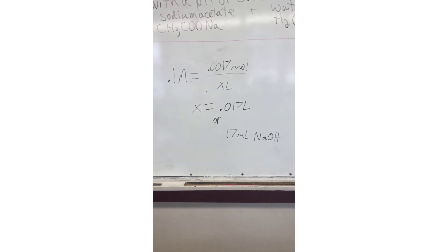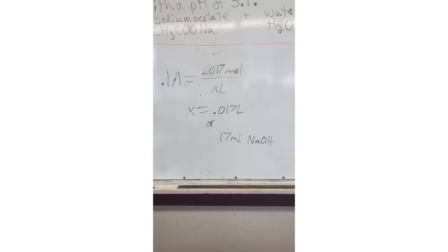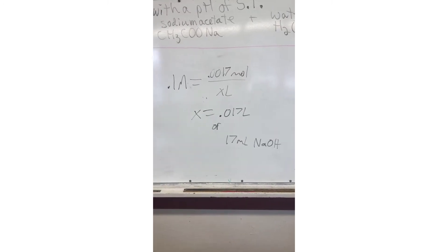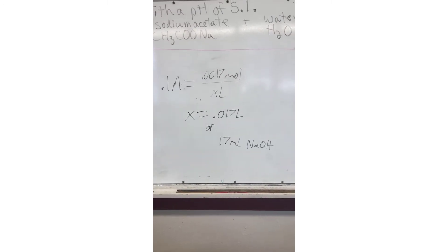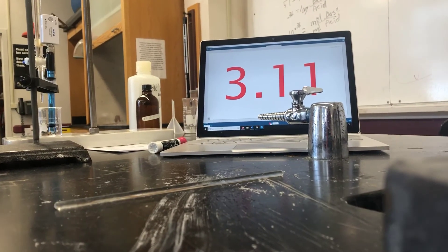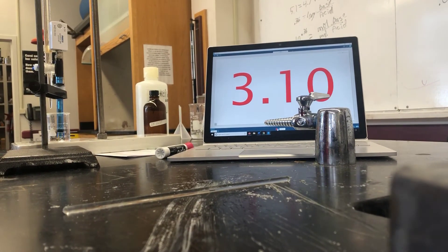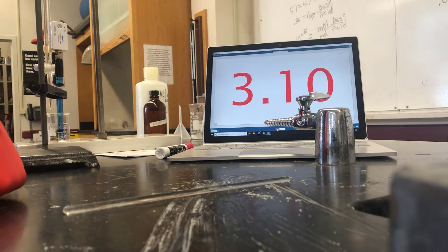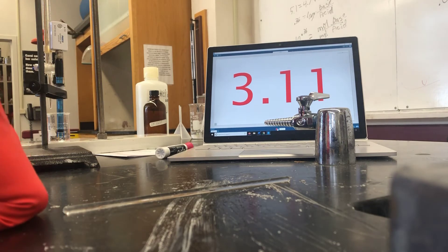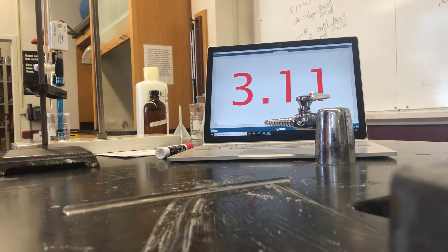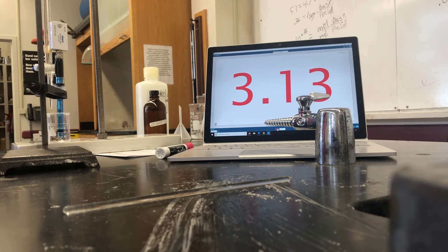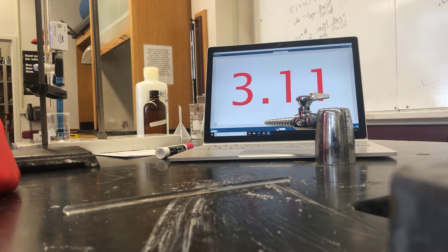Now we're going to see how that reaction works by titrating our acetic acid with the sodium hydroxide. In our flask, we have our weak acetic acid ready. It is completely unbuffered right now, which is clear by the fact that it has a very acidic pH, and so we're going to begin buffering it by titrating in our sodium hydroxide.